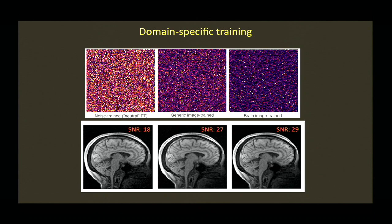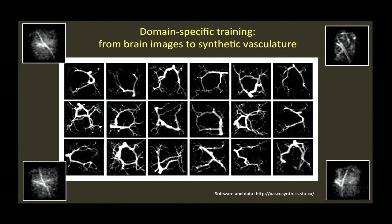Domain-specific training is really interesting — we get a performance boost as we train on things more like the data we'll finally reconstruct. For the roots project, Neha reconstructed root images using AutoMap trained on brain images, and of course as you get more domain-specific and train on data with the same kinds of sparsity, you'll do better. We're working on generating synthetic vasculature images from software so that the appropriate sparsity can be learned and the network trained accordingly.